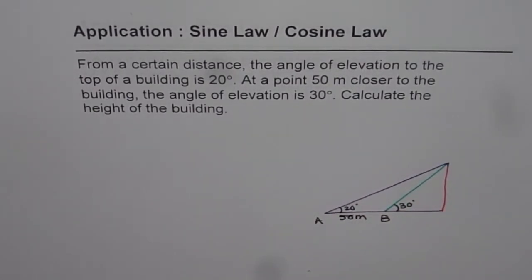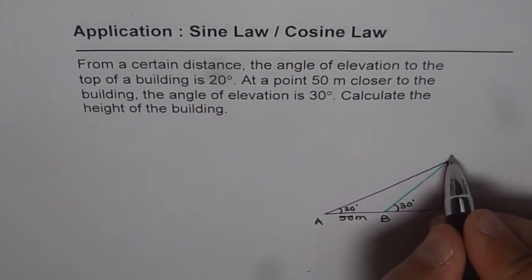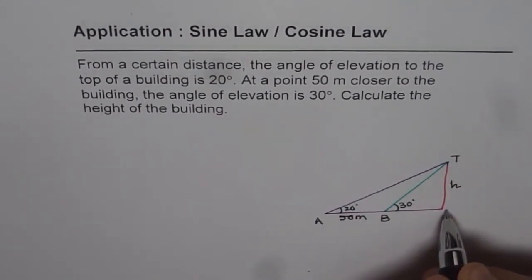So that is 50 meters. And what we need to find is height of the building, height h, right? Let us say this is the top of the building T and that is the base O. Now we need to find the height, TO.